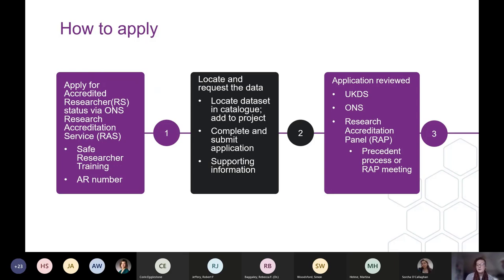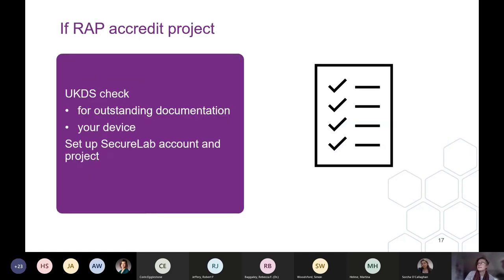With ONS approval, your application goes to the Statistics Authority's Research Accreditation Panel, or RAP. There are two options: your application might go through the precedent process, reviewed by a subgroup of the panel, with a decision potentially reached in a couple of weeks; or it could be presented at the next full RAP meeting. Once we're informed whether your project can be accredited, we'll check for any missing documentation and our technical support team will finalise their checks and set you up with a SecureLab account and project.